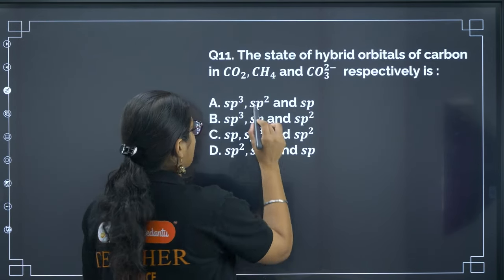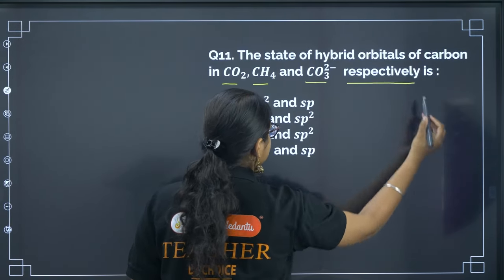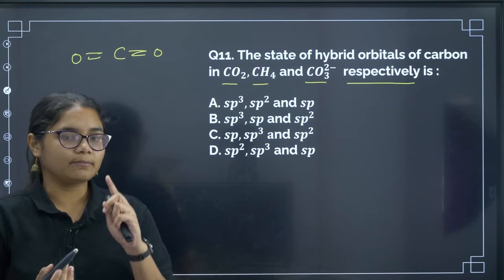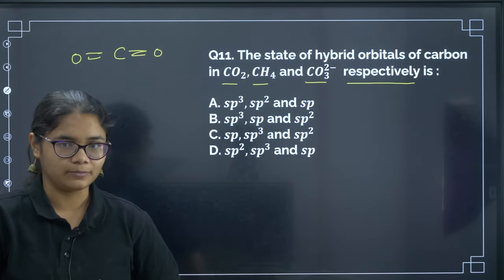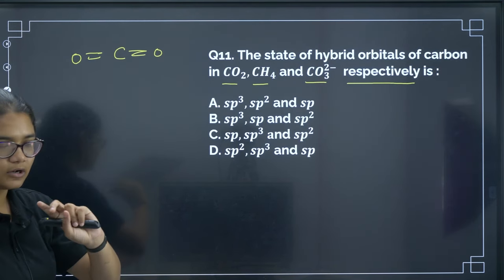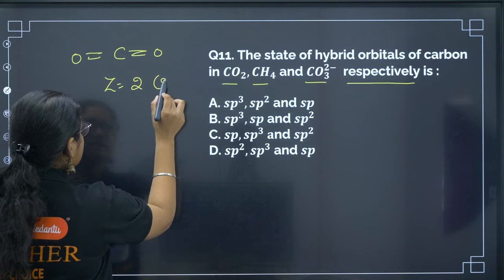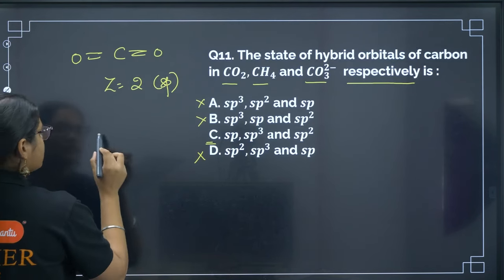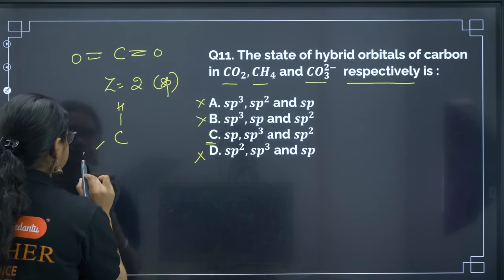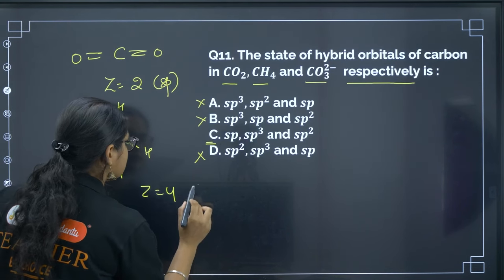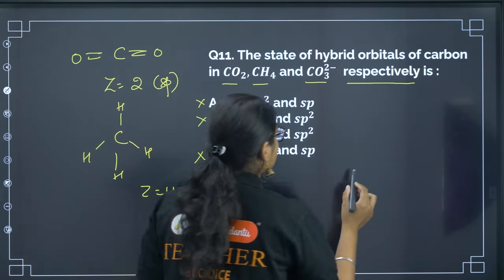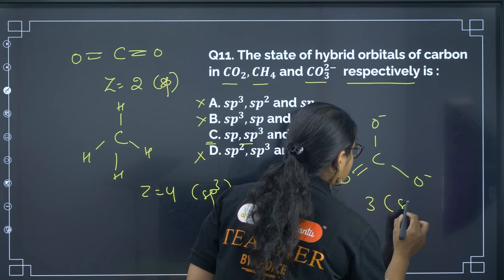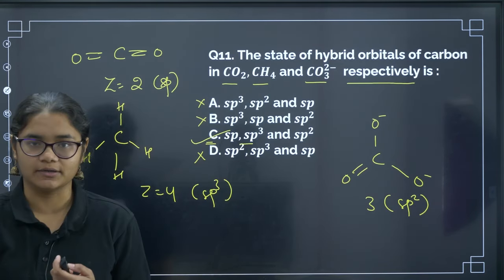Next: the hybridization of carbon in CO2, CH4, and CO3²⁻ respectively. For CO2: 2 sigma bonds and 0 lone pairs, so z = 2, hybridization is SP. For CH4: 4 sigma bonds, z = 4, hybridization is SP3. For CO3²⁻: 3 sigma bonds, hybridization is SP2. The correct answer is option C.